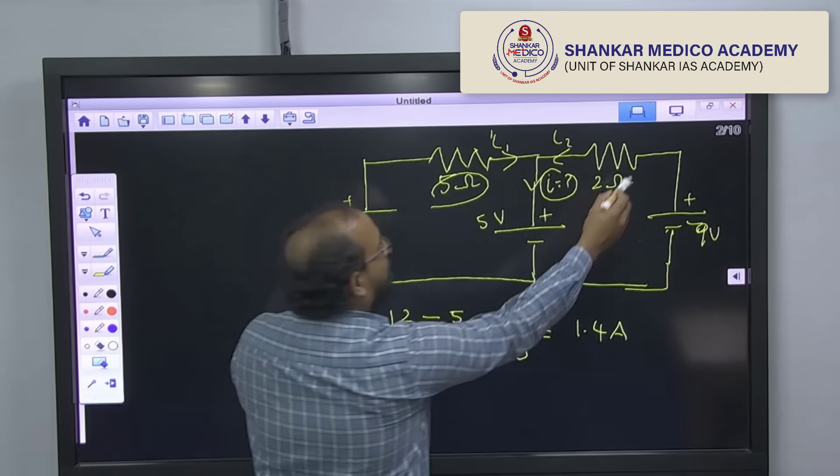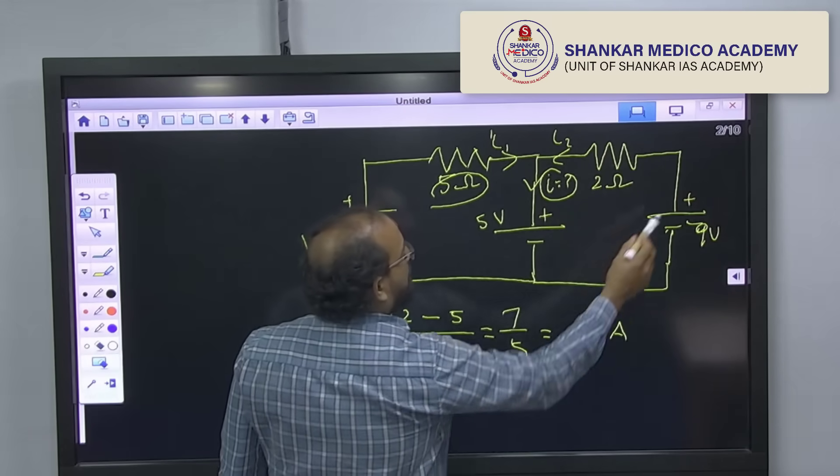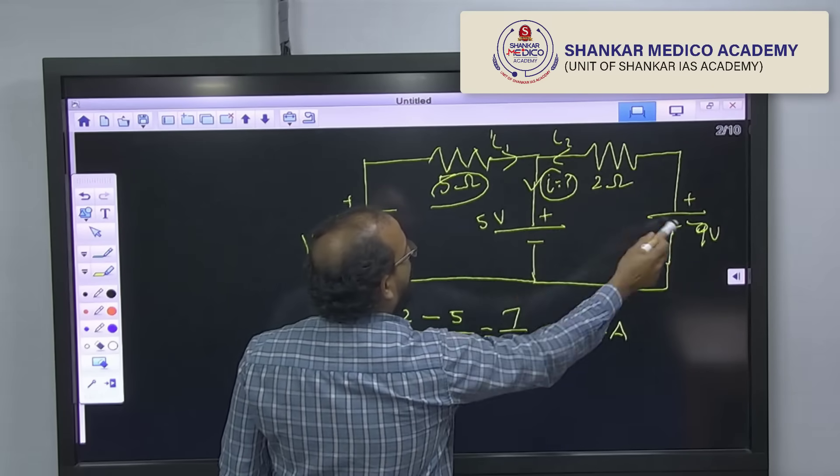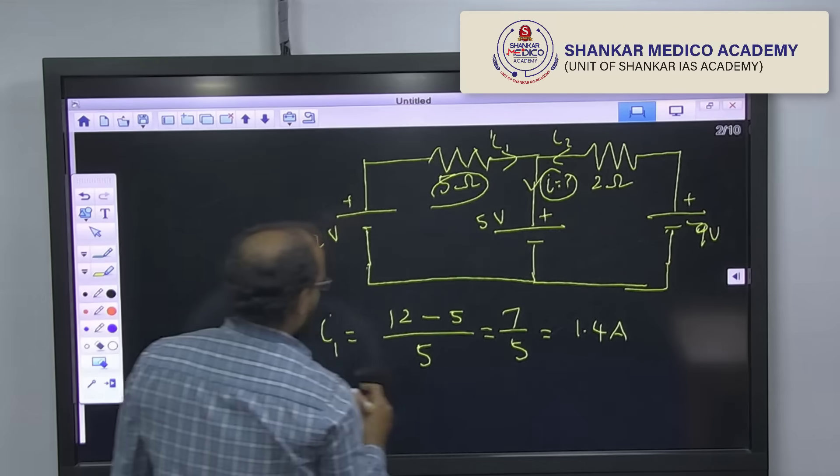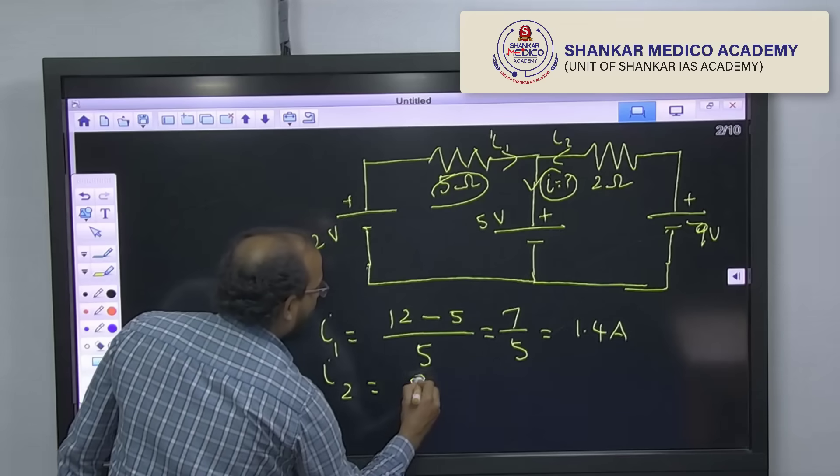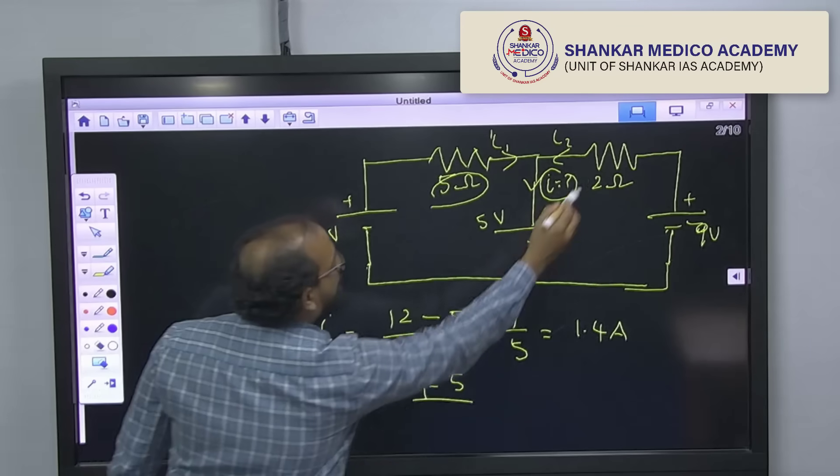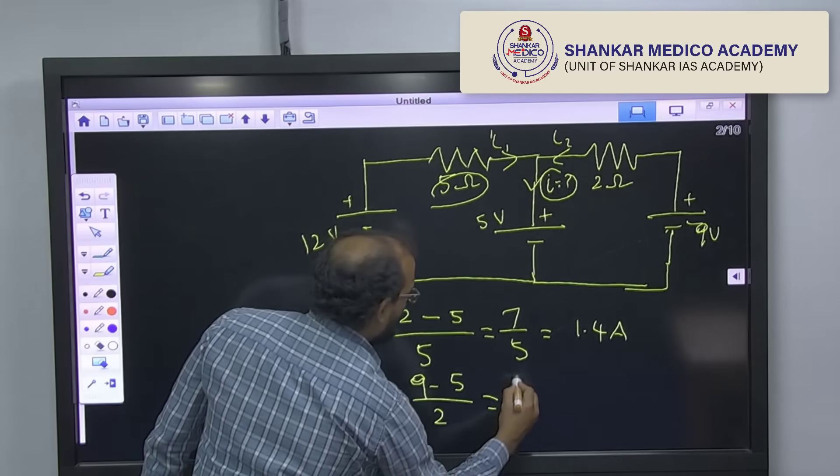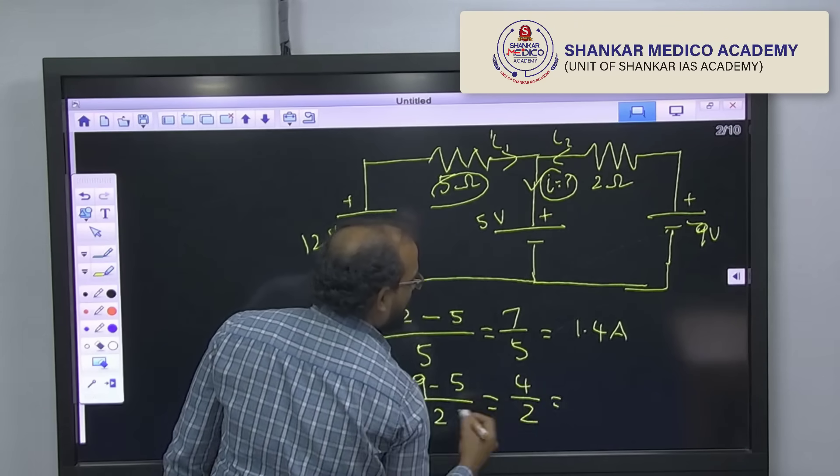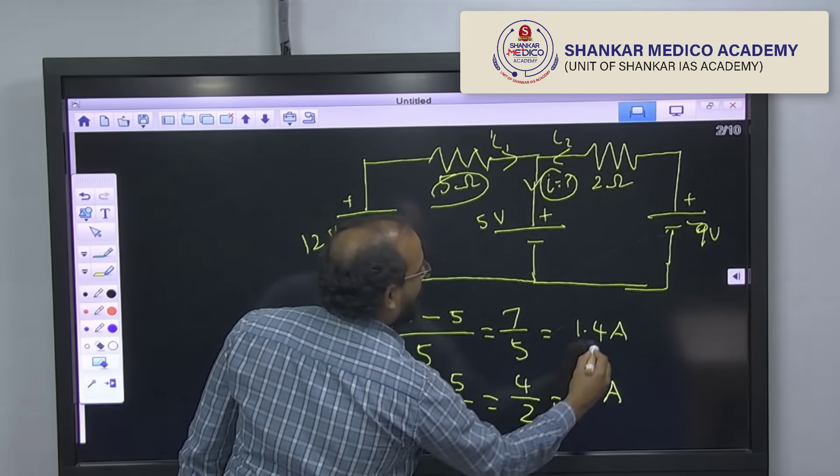Similarly, I2, that is the current flowing in the 2 ohm resistor, 9 volt, 5 volt, 9 minus 5 divided by resistor, 2 ohms. So, 4 by 2, that is nothing but 2 ampere.